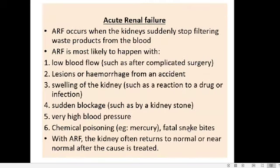Acute renal failure occurs when the kidneys suddenly stop filtering waste products from the blood. Common reasons include low blood flow to the kidneys, which can happen after complicated surgery, accidents, lesions, or hemorrhage. It can also result from a reaction to a drug or infection causing kidney inflammation, blockage via kidney stones, high blood pressure, mercury poisoning, or fatal snake bites. If the cause is treated, the kidney can return to normal.